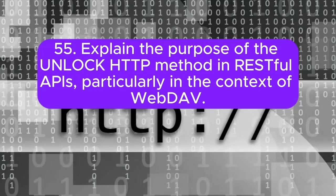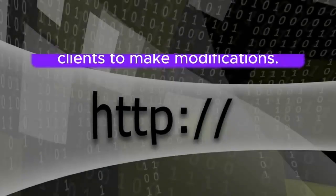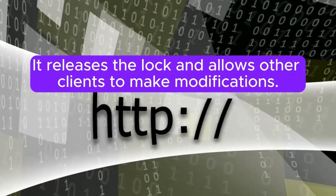Question 55: Explain the purpose of the UNLOCK HTTP method in RESTful APIs, particularly in the context of WebDAV. UNLOCK is used in WebDAV to unlock resources that have been previously locked for editing. It releases the lock and allows other clients to make modifications.